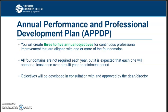Your Annual Performance and Professional Development Plan is where you create three to five annual objectives. This is a calendar year, not academic year, for continual improvement, and they are aligned with one or more of the four domains. So this might be 'I will attend the New Horizons conference' or 'I will build a new PSY 235 class online.' All four domains are not required, but it is expected that they will appear over multi-year appointments, and you will consult with your Dean or Director as to what these are.